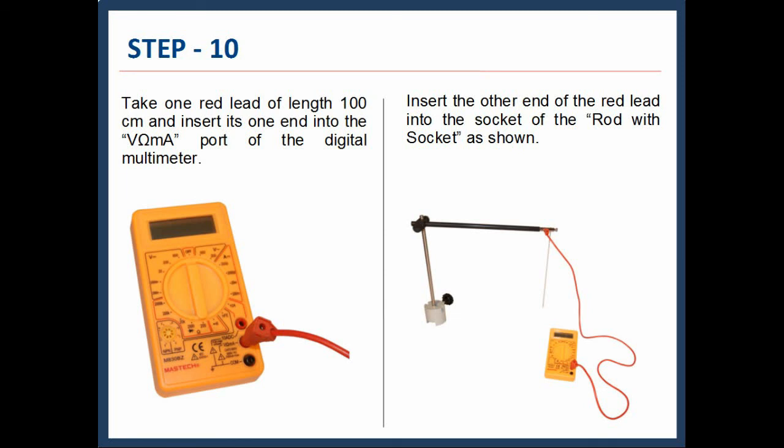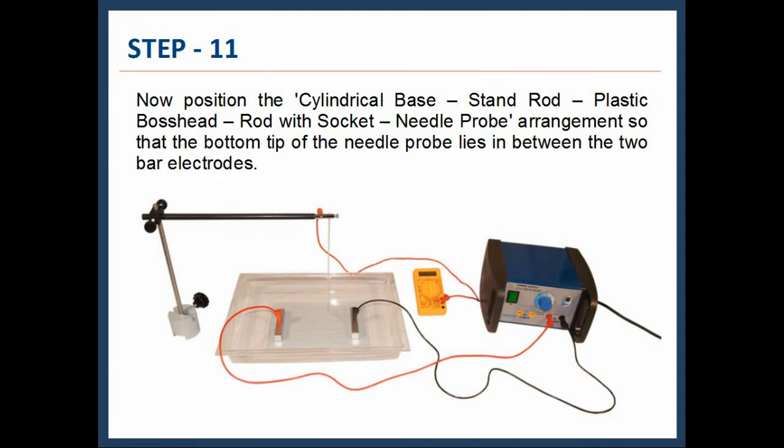Next, insert the other end of the red lead into the socket of the rod with socket, as shown. Now position the cylindrical base, stand rod, plastic boss head, rod with socket, needle probe arrangement so that the bottom tip of the needle probe lies in between the two bar electrodes.